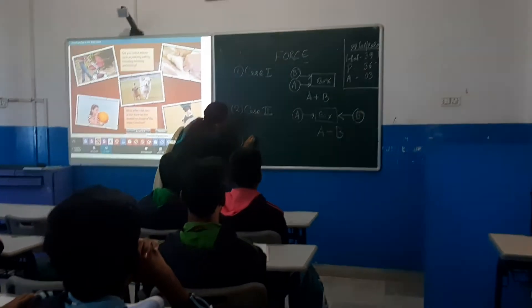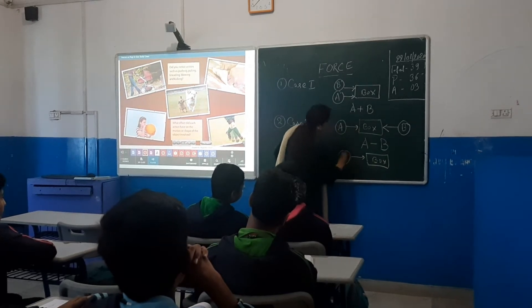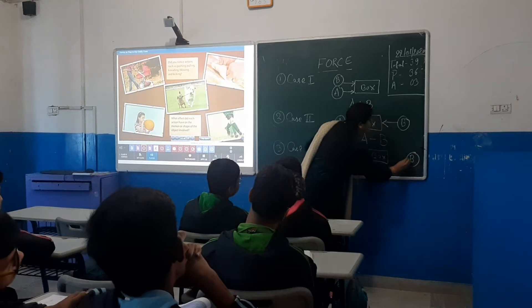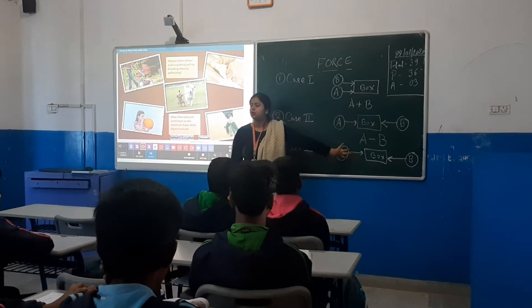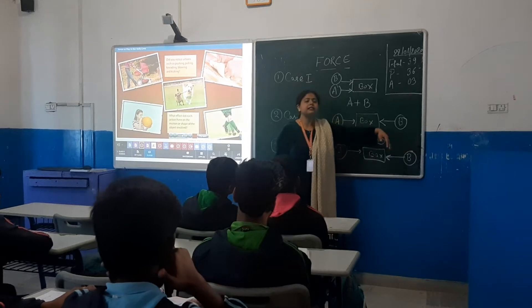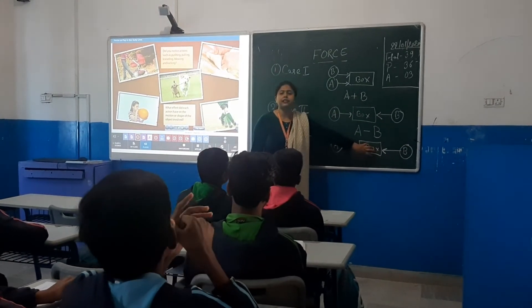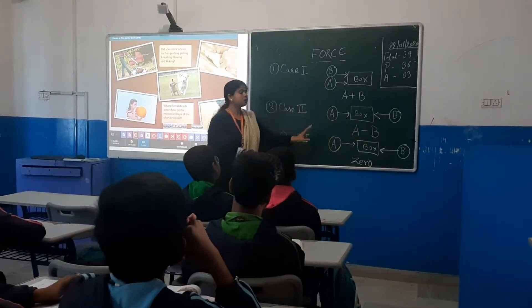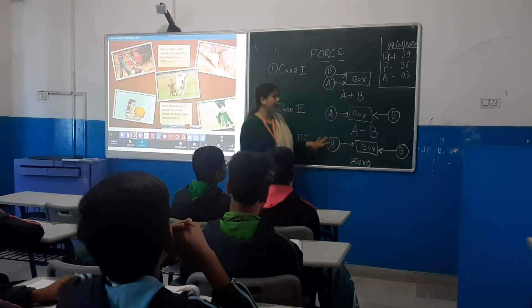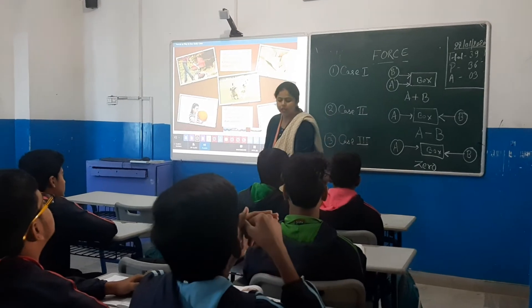Case number three: the same box is there. A is applying force in one direction and B is applying force in the opposite direction. The magnitude of force applied by A is equal to the magnitude of force applied by B. What will be the net force acting on the box? Zero Newtons. So in case three, the force applied by A and B is equal and in opposite directions, so the net force acting on the box will be zero Newtons.